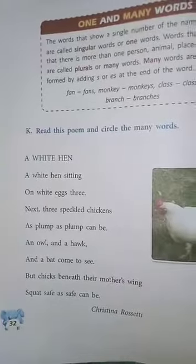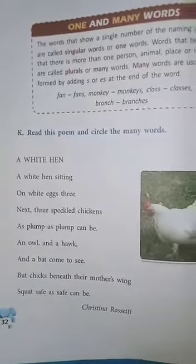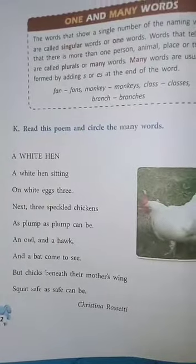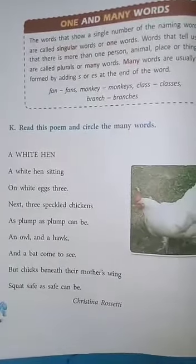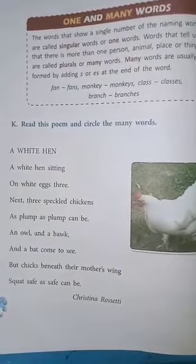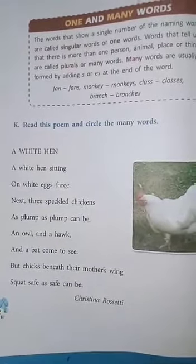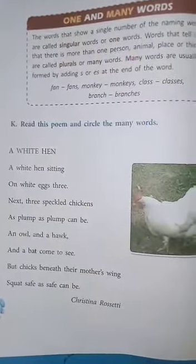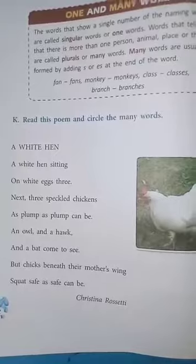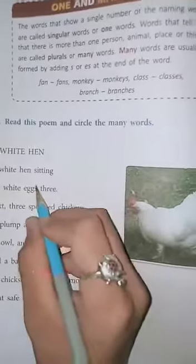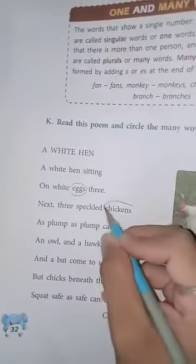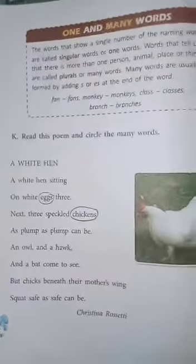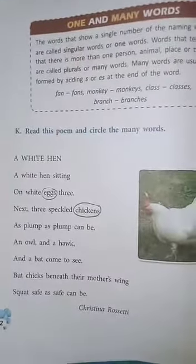Moving on to page number 32, exercise K. Read this poem and circle the many words — which are plural in number. You have to do this question on your own. For example, eggs and chickens are many words. Complete this exercise on your own.